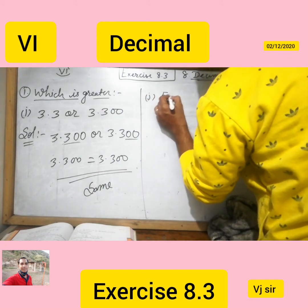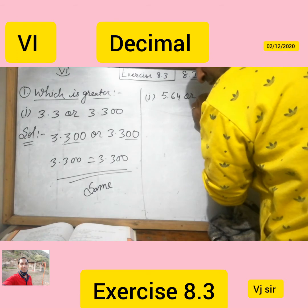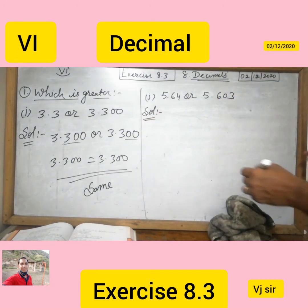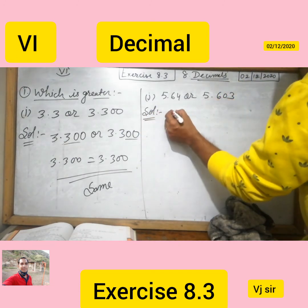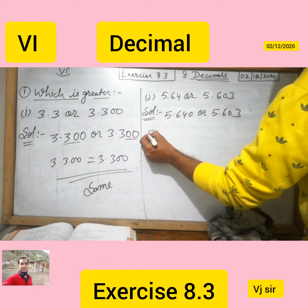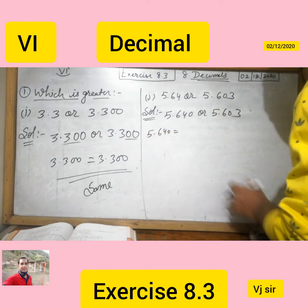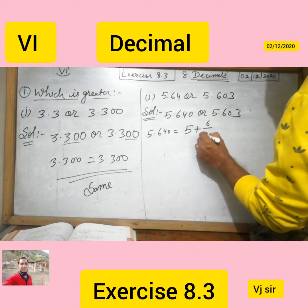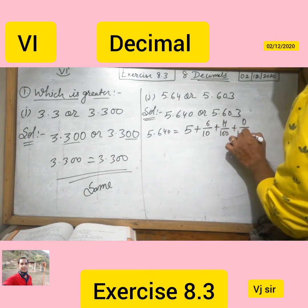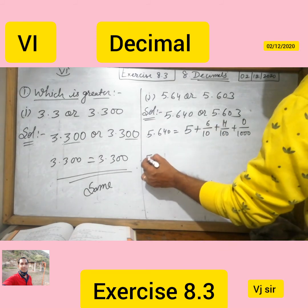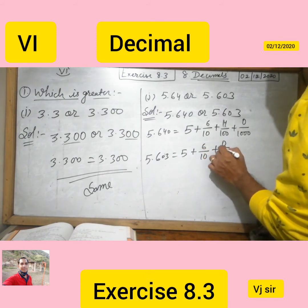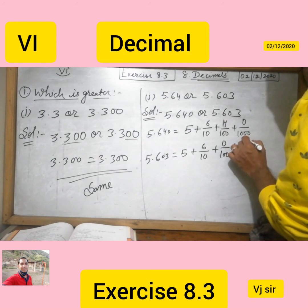Now the last question, j: is 5.64 greater or 5.603? First we make equal decimal places: 5.640 and 5.603. We can represent 5.640 as 5 plus 6 upon 10 plus 4 upon 100 plus 0 upon 1000. And 5.603 is 5 plus 6 upon 10 plus 0 upon 100 plus 3 upon 1000.